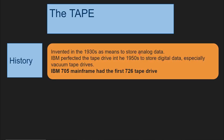The tape was invented actually way before the mainframe happened. IBM invented the tape device in the 1930s as a means to store analog data such as voice, seismic data, and other analog data. Then in the 1950s IBM perfected the tape drive as we know it and started to use tape devices to store digital data, especially with vacuum tape drives. The IBM 705 mainframe, which is more geared towards accounting and business records processing, had a tape drive from the beginning and it was called the 726 tape drive.